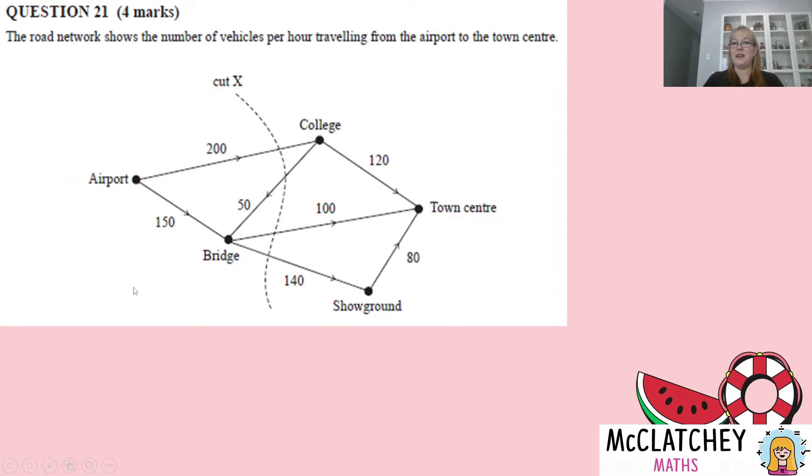Okay, our next one here is question 21 worth four marks. The road network shows the number of vehicles per hour traveling from the airport to the city center or the town center. So we need to determine the capacity of cut X. Now remember, when we're working out the capacity of a cut, we've got to add together all of the lines that this cut passes through. And there's four of them.